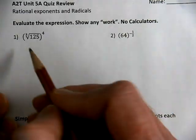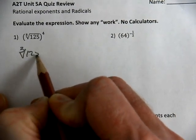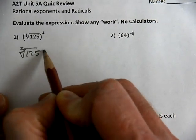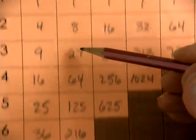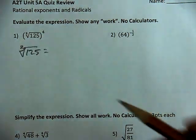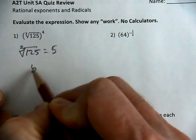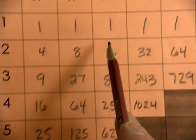We need to simplify, so we're working with the cube root of 125. We know what times what times what makes 125. The cube root of 125 is 5, and 5 to the 4th power is 625.